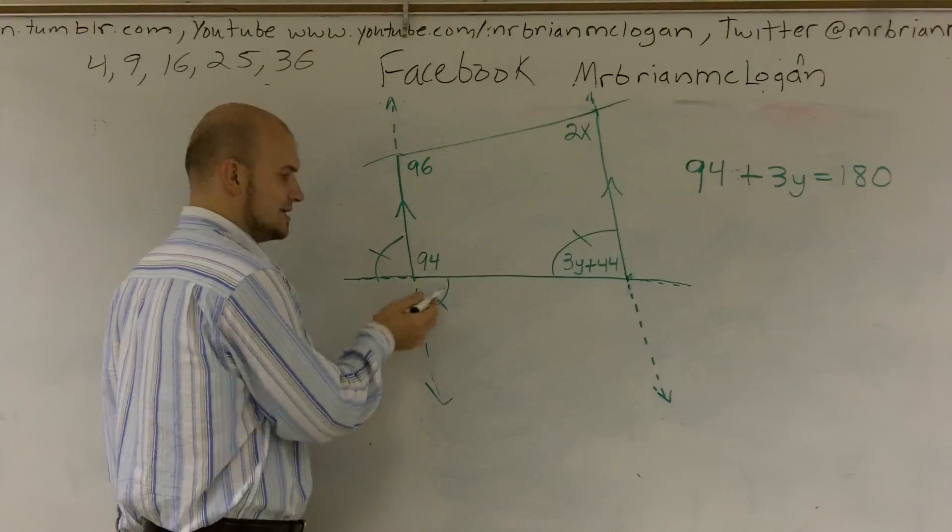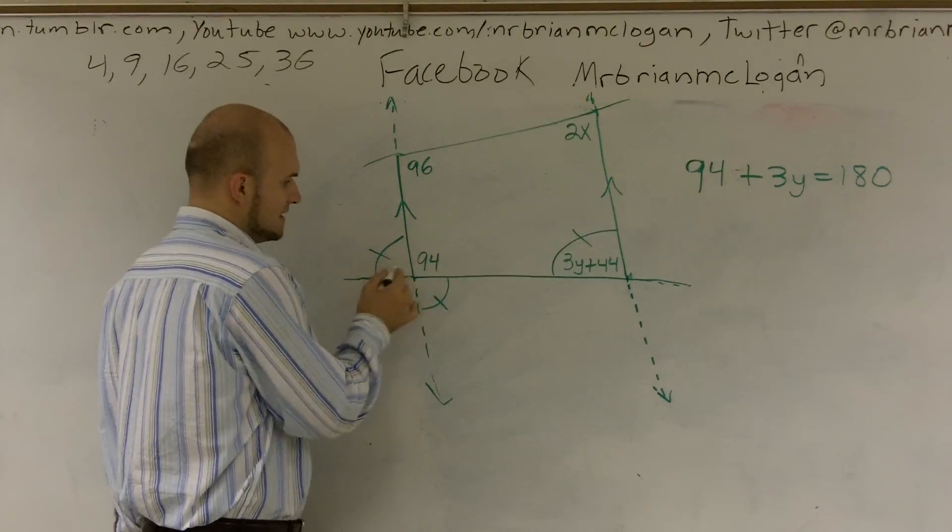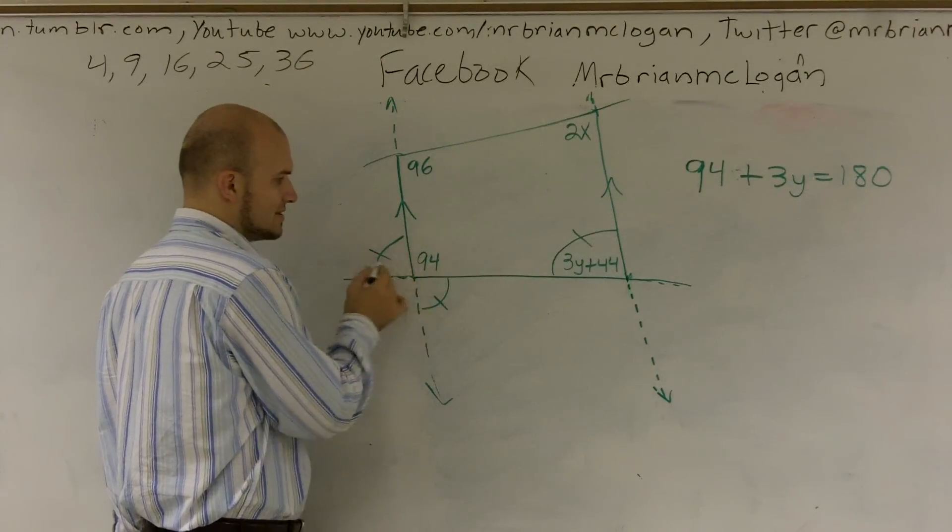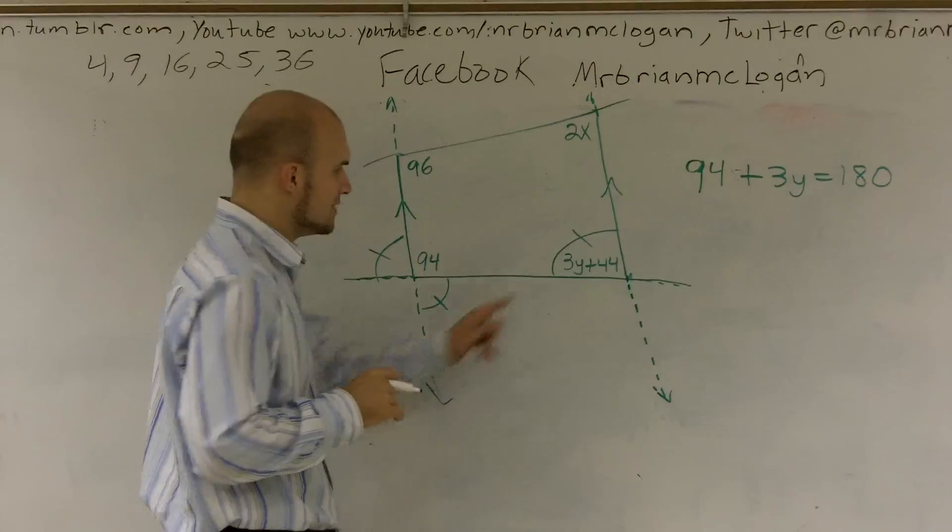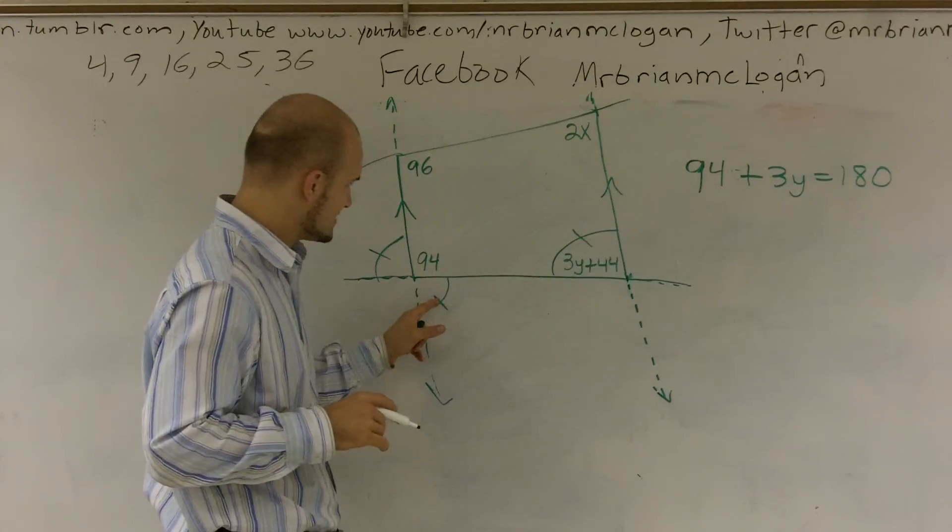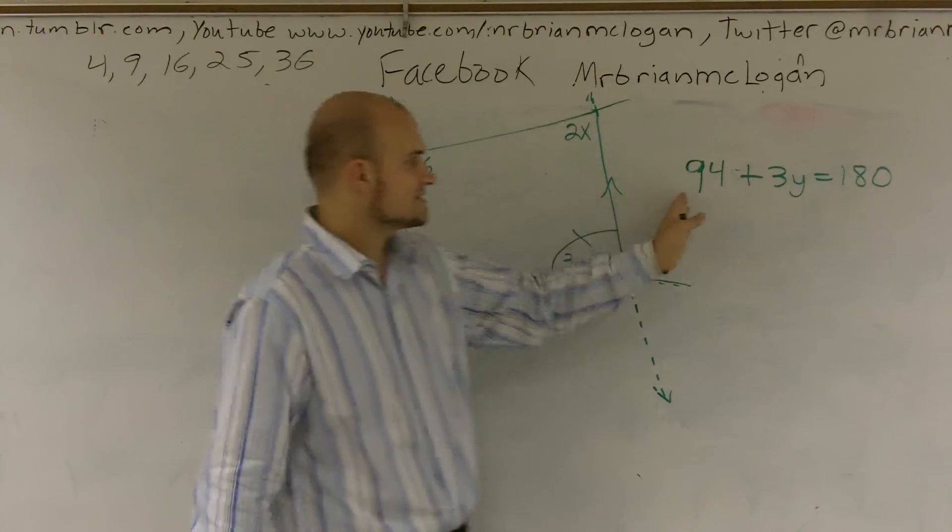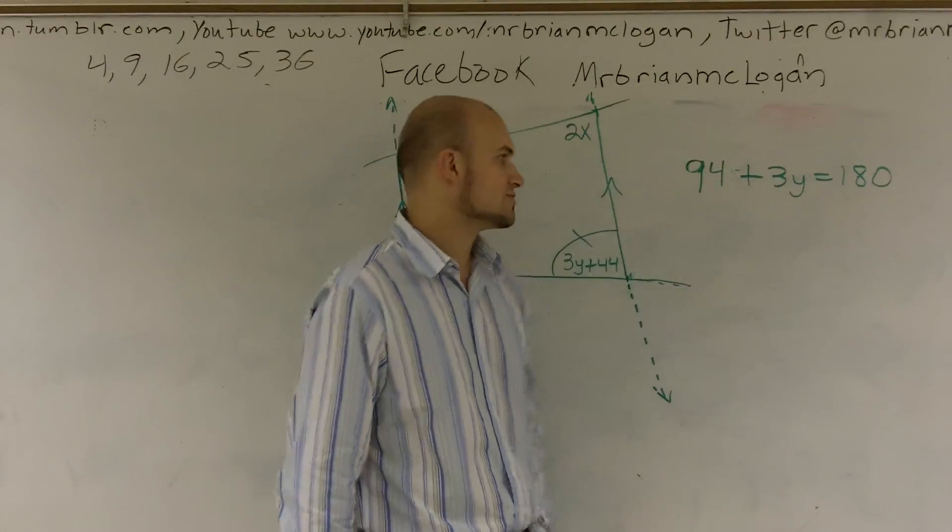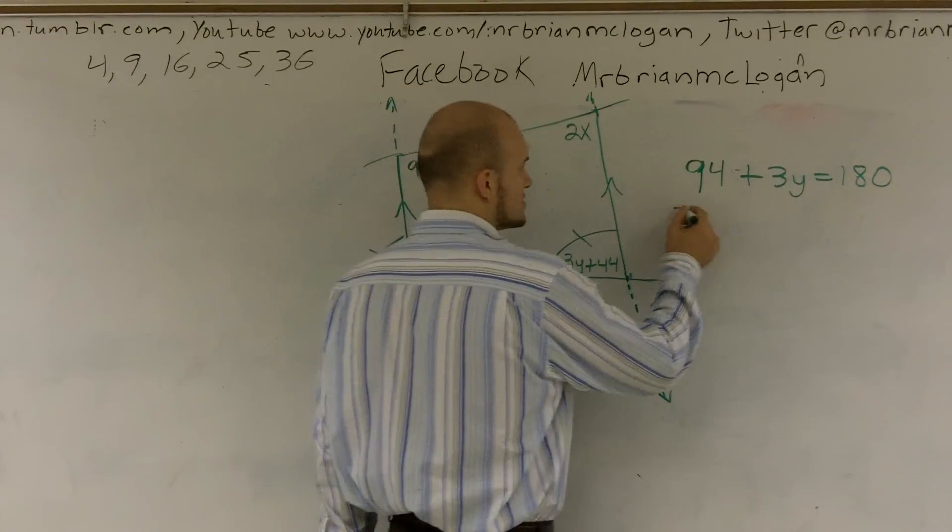These two angles add up to 180 because they also make a straight line. So therefore, since this is equal to this and these two add up to 180, I can now state that 94 plus 3y equals 180. I'm simply going to subtract 94 from both sides. I get 3y is going to equal 86.